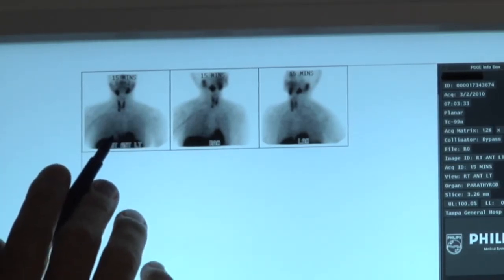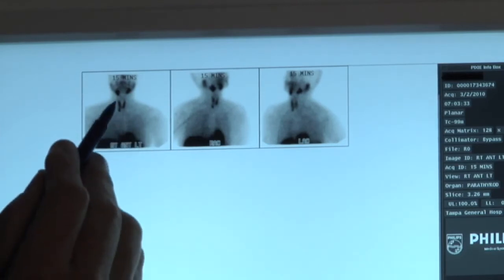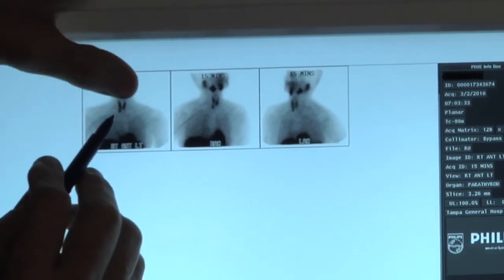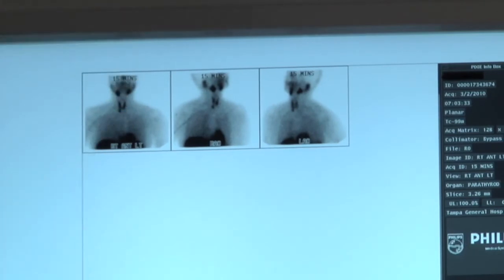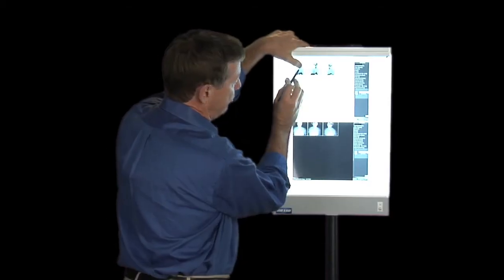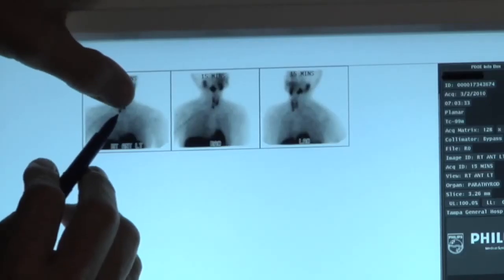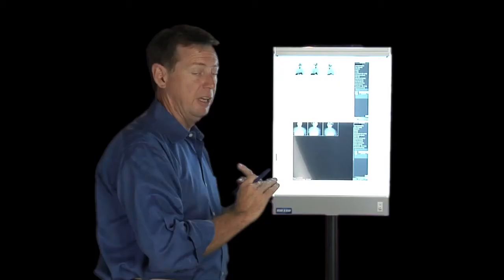So we've talked about some of this before. The parathyroid tumors can be anywhere in this big box. We've discussed that in the past. The butterflies, the thyroid, right there is this patient's parathyroid tumor. A clean, crisp, in-focus scan is what you're looking for.